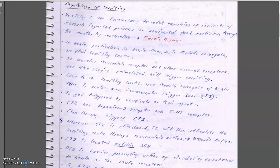Vomiting is the involuntary forceful expulsion of contents of the stomach, or expulsion of ingested poisons or undigested food particles, through the mouth by the mechanism called the emetic reflex. The brain controls the emetic reflex. The vomiting center is found in the brain stem, particularly in the medulla oblongata, and contains muscarinic receptors.